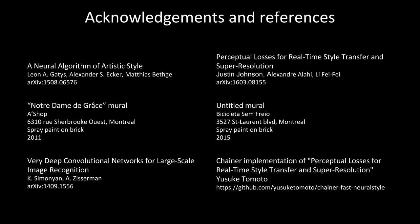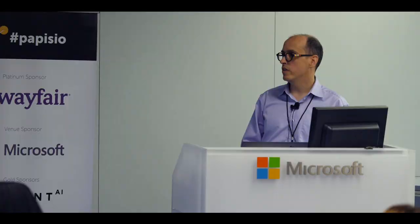Acknowledgements: Gatys' neural style transfer landmark paper, Johnson — we improved on it. The two murals used are from Montreal: Notre Dame de Grasse and an untitled one. Without VGG16 this technique would not be possible. All the code we used and started from is a Chainer fast neural style implementation. That's it — thank you, and any questions?